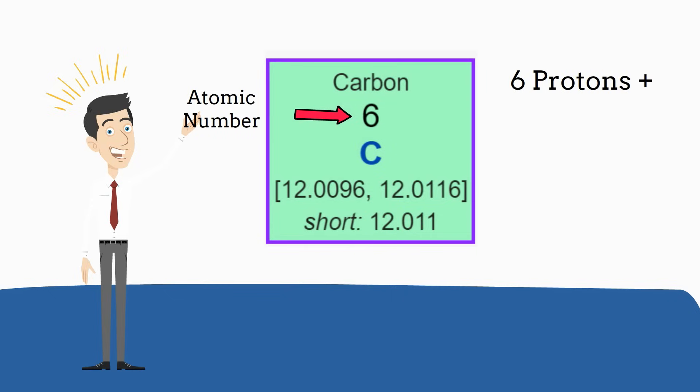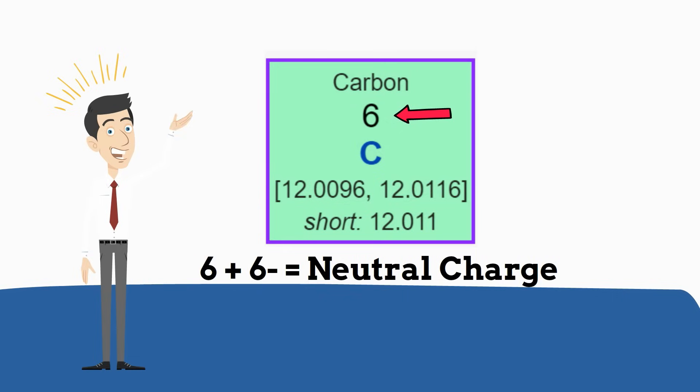Next let's figure out the number of electrons. Unless the element is an ion, which means it has a positive or negative charge, it will have the same number of protons and electrons. So since you have 6 protons you will have 6 negative electrons.